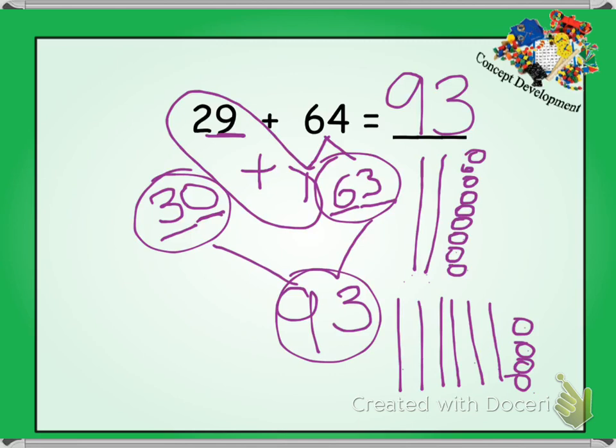10, 20, 30, 40, 50, 60, 70, 80, 81, 82, 83, 84, 85, 86, 87, 88, 89, 90, 91, 92, 93. Check.